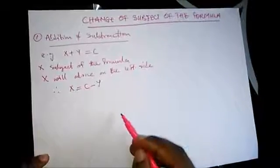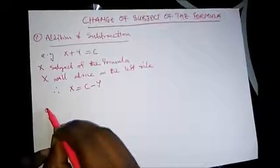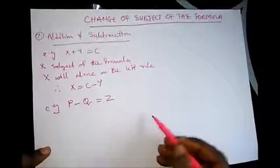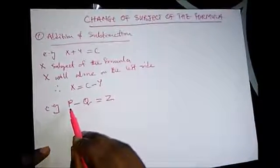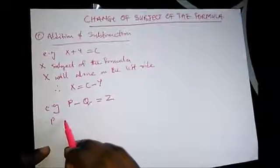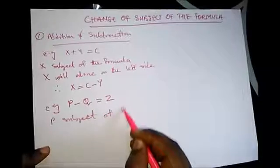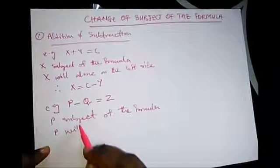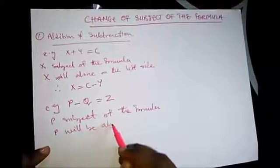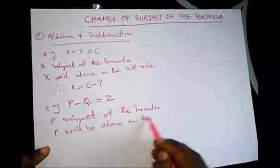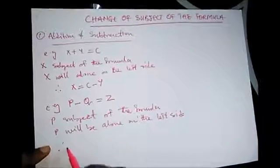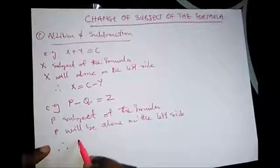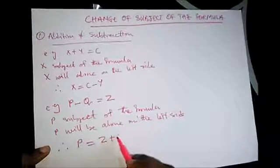If we also have p minus q equal to z, to make p the subject of the formula, p will be alone on the left side. We take minus q to the right-hand side, so we have p equal to z plus q. So these are operations involving addition and subtraction.